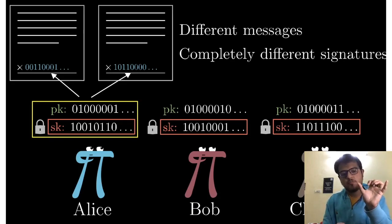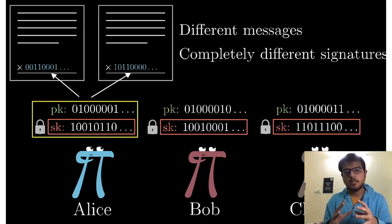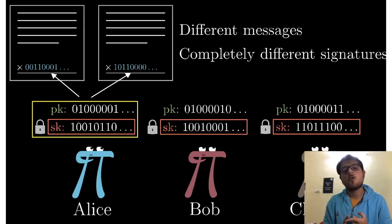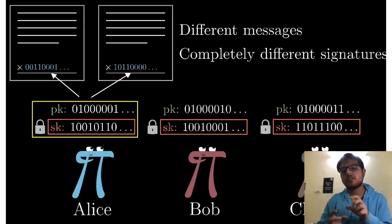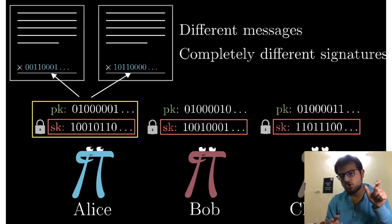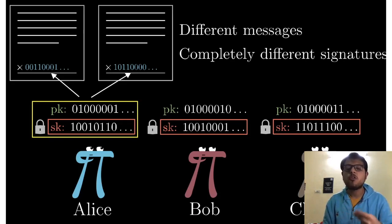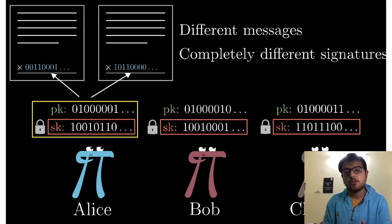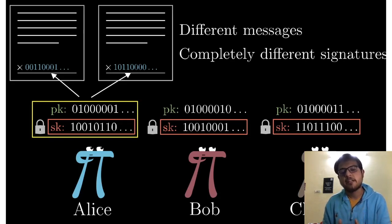You take the message from Alice and she puts her secret key into a function — that function results in a signature. So your signature is dependent on both the message and your secret key. Now to verify, Bob has to take Alice's public key, the message, and the signature — these three components — to verify whether it's true or false that the transaction was written by Alice herself. Even WhatsApp and other communication systems use a certain level of private key and public key cryptography so that your messages are encrypted. Similarly, a digital signature is created and utilized to sign a transaction.